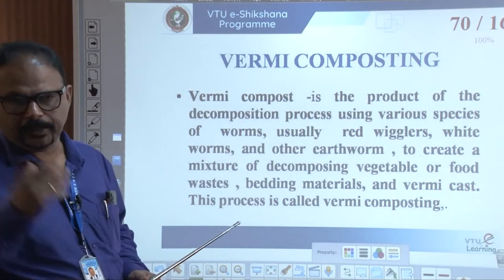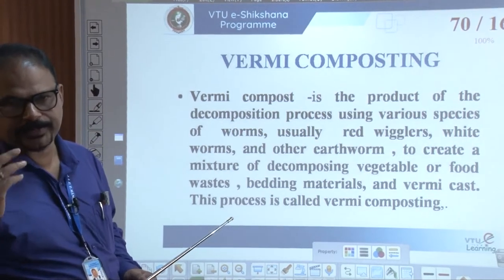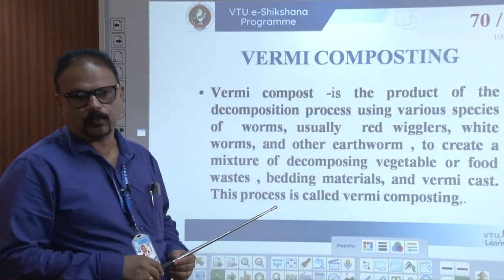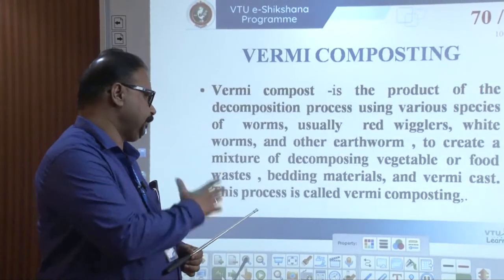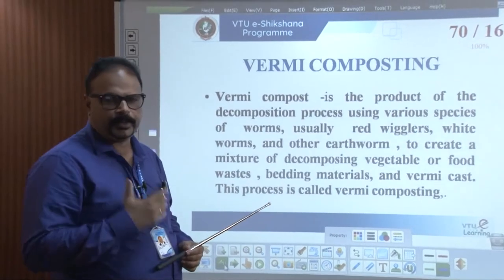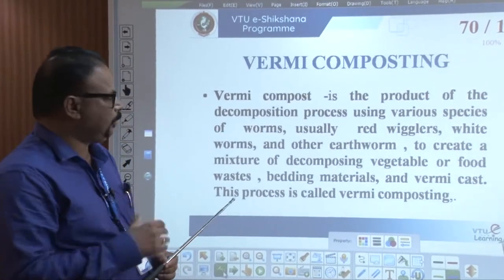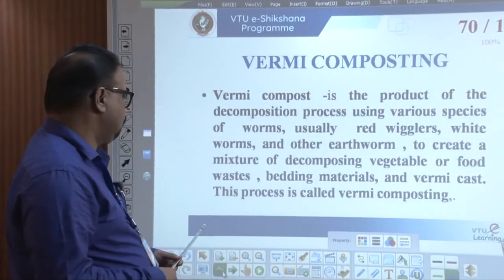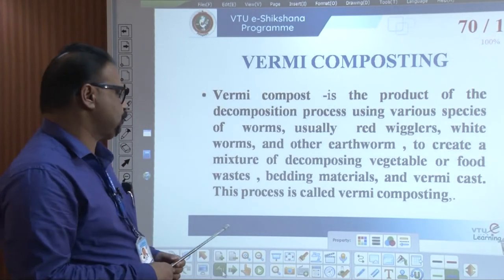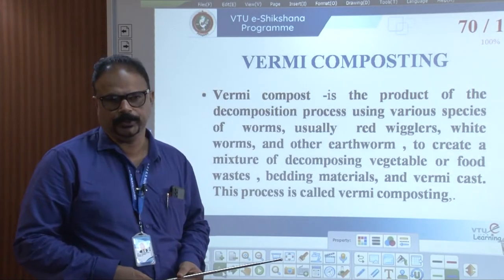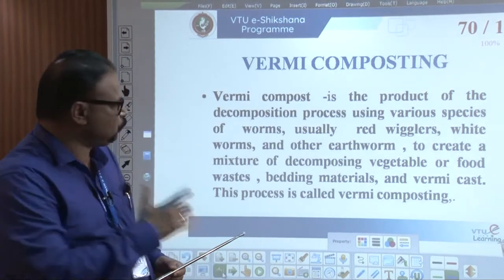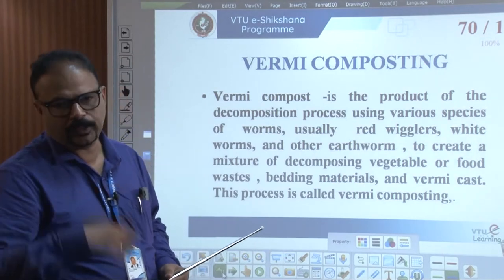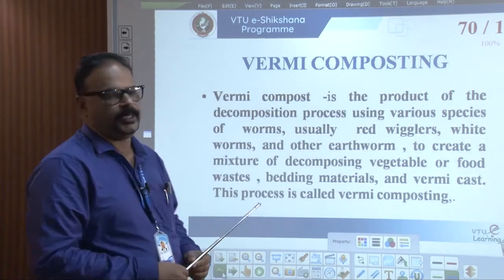Vermicomposting is the product of a decomposition process using various species of worms - usually red worms, white worms, and other earthworms. Majorly in India we are using earthworms. Hybrid worms from other countries are also now used to decompose food waste. In one word, worms are used to decompose food material, vegetables, or anything. The final product is vermicompost.